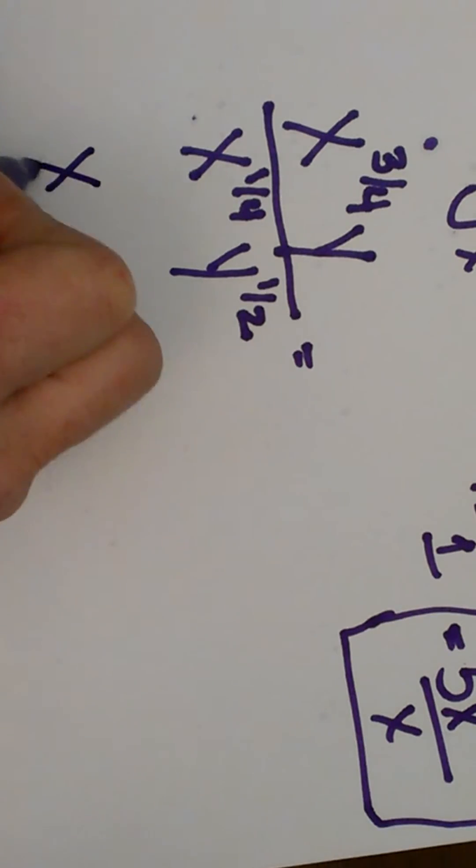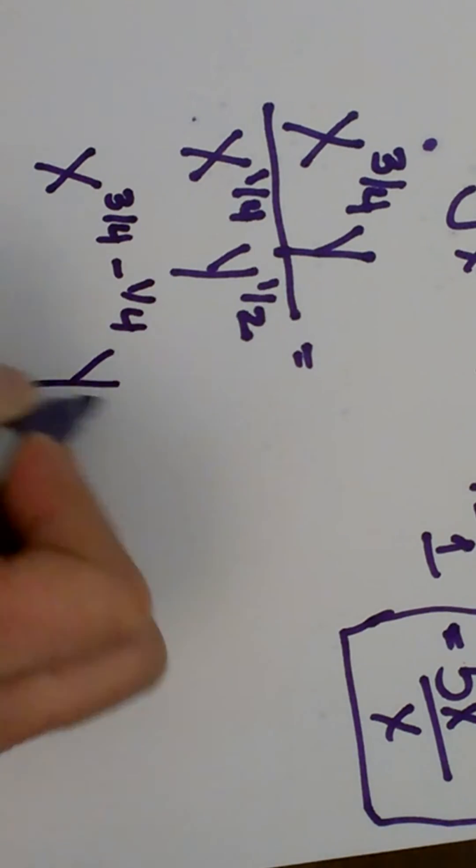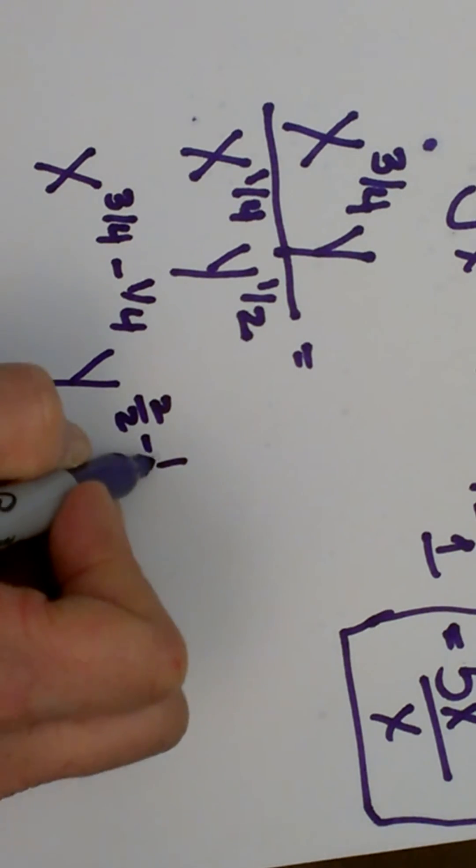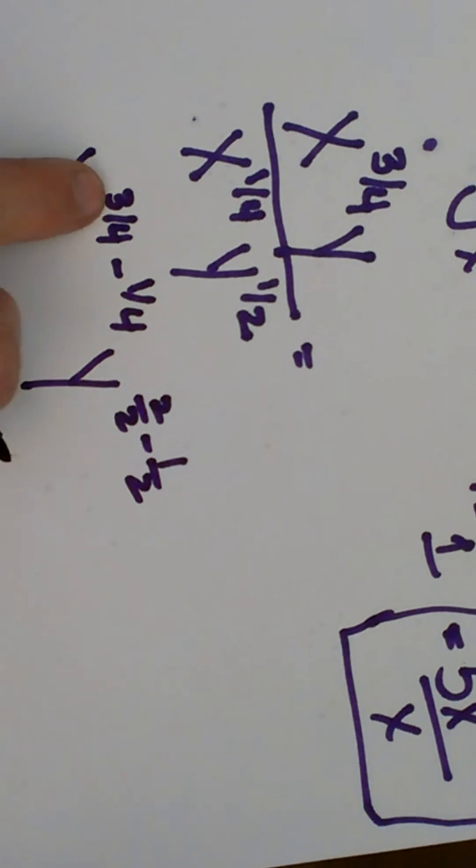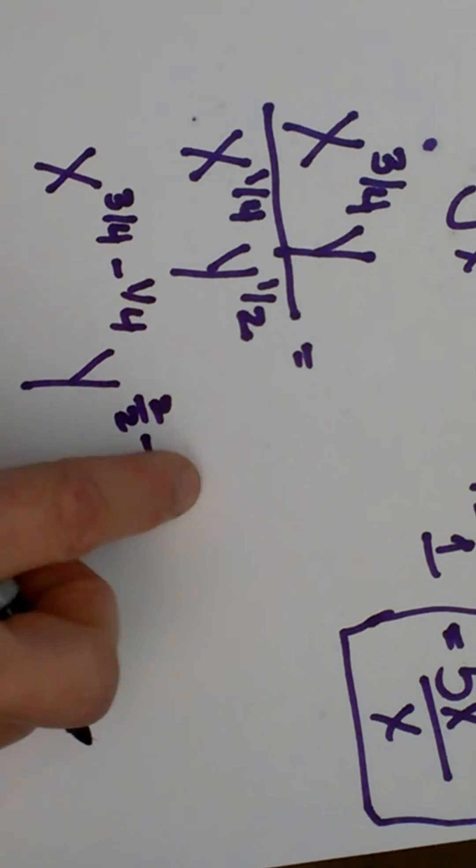So we are going to have x to the 3/4 minus 1/4, and then y to the, ok that power up there we assume that it is a 1, and I am going to write it as 2 over 2, so x to the 3/4 minus 1/4, y to the 2/2, which is 1, minus 1/2.